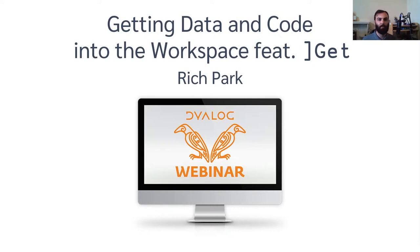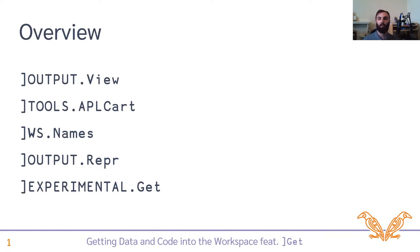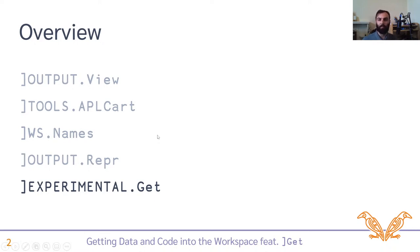Hello and welcome to today's dialogue webinar, which is all about getting data and code from various sources into the workspace. This is actually a continuation of a previous webinar in which I introduced the various new user commands: Vue, Applecart, Names, and Repr, which are included in installations of Dialog version 18.2. But there is also this experiment called GET, which does quite a lot, so we thought it deserved its own treatment.